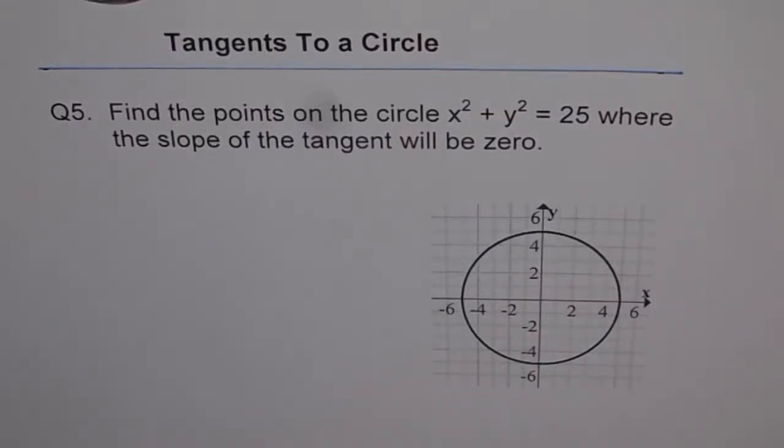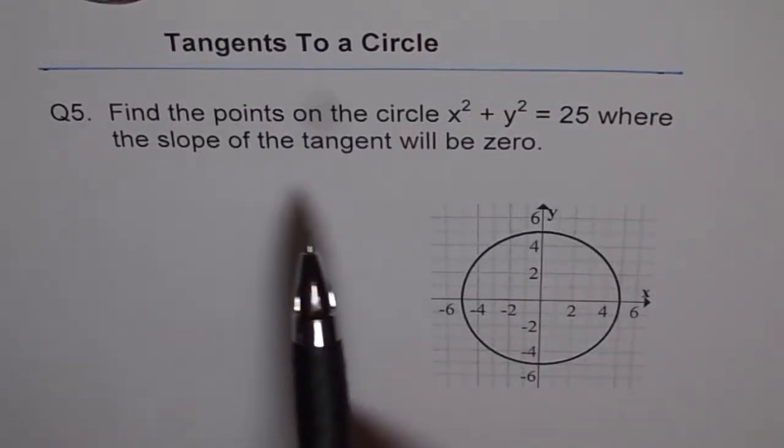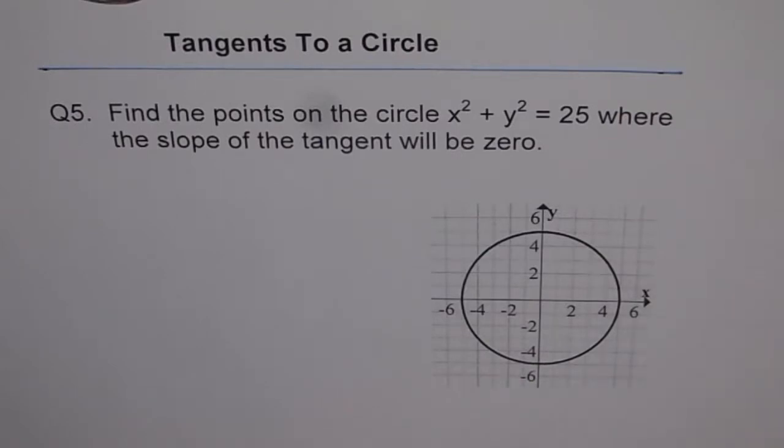Tangents to a circle. Question 5. Find the points on the circle x square plus y square equals 25 where the slope of the tangent will be 0.